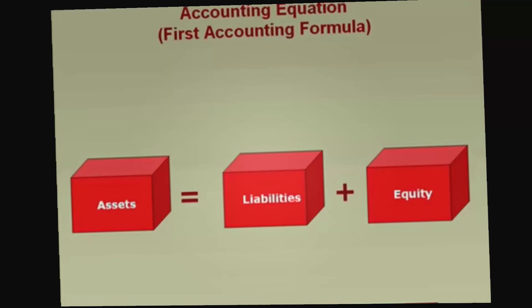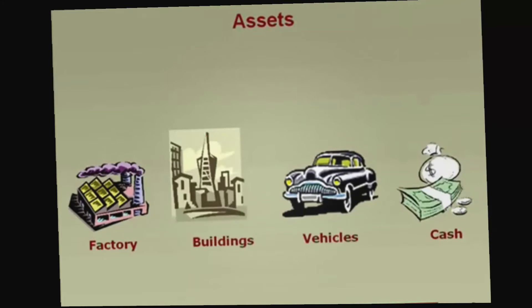Let me give you some basic definitions. Assets are anything of monetary value to a business. Businesses acquire assets to make products they can sell and make money. The formal definition of assets is anything that can provide future economic benefits to a corporation. Examples include a factory, buildings, motor vehicles, and of course cash — anything that can provide future economic benefits.